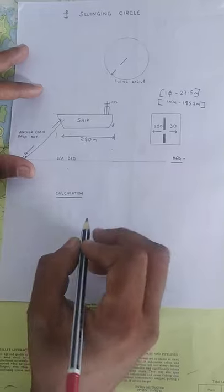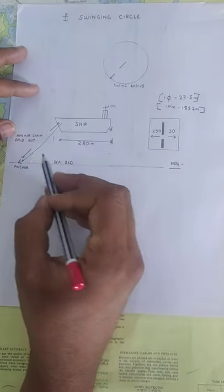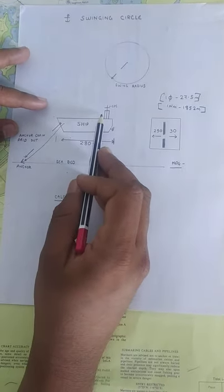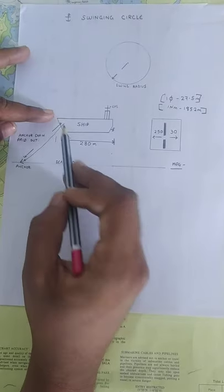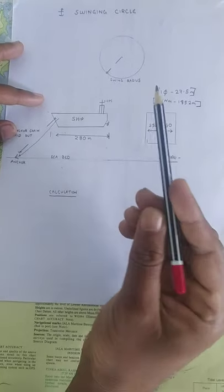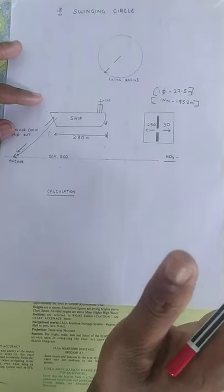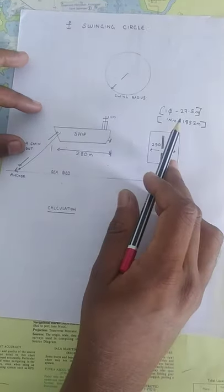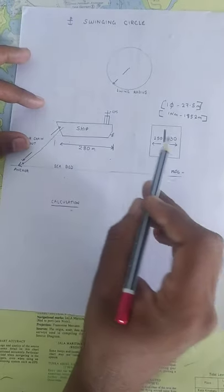Now, the basic calculation is very simple. You take the length of the ship from the GPS to the anchor cable, then the anchor paid out and you calculate it and convert it into nautical miles.